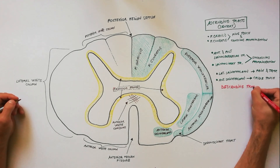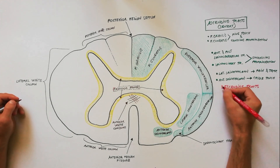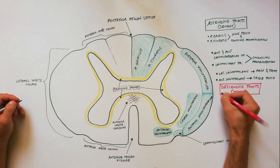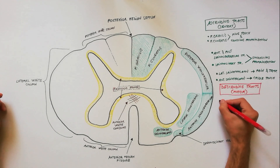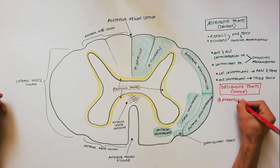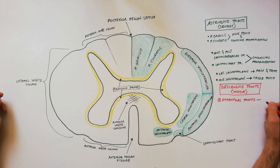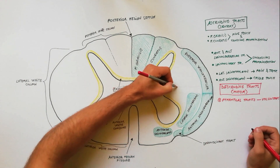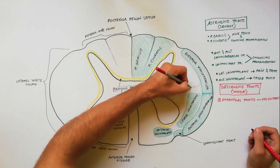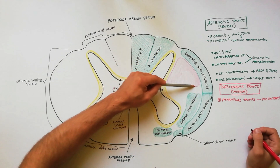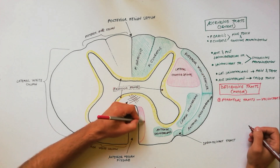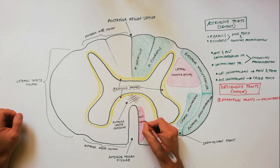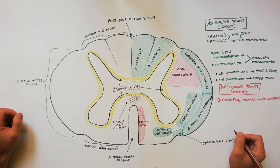With the red color, we will draw the descending tracts. We have two types of descending tracts: pyramidal and extrapyramidal. The pyramidal tracts are concerned with voluntary motor activity. The pyramidal tracts are the lateral corticospinal tract, located medial to the posterior spinal cerebellar tract, and the anterior corticospinal tract, located in the vicinity of the anterior median fissure.